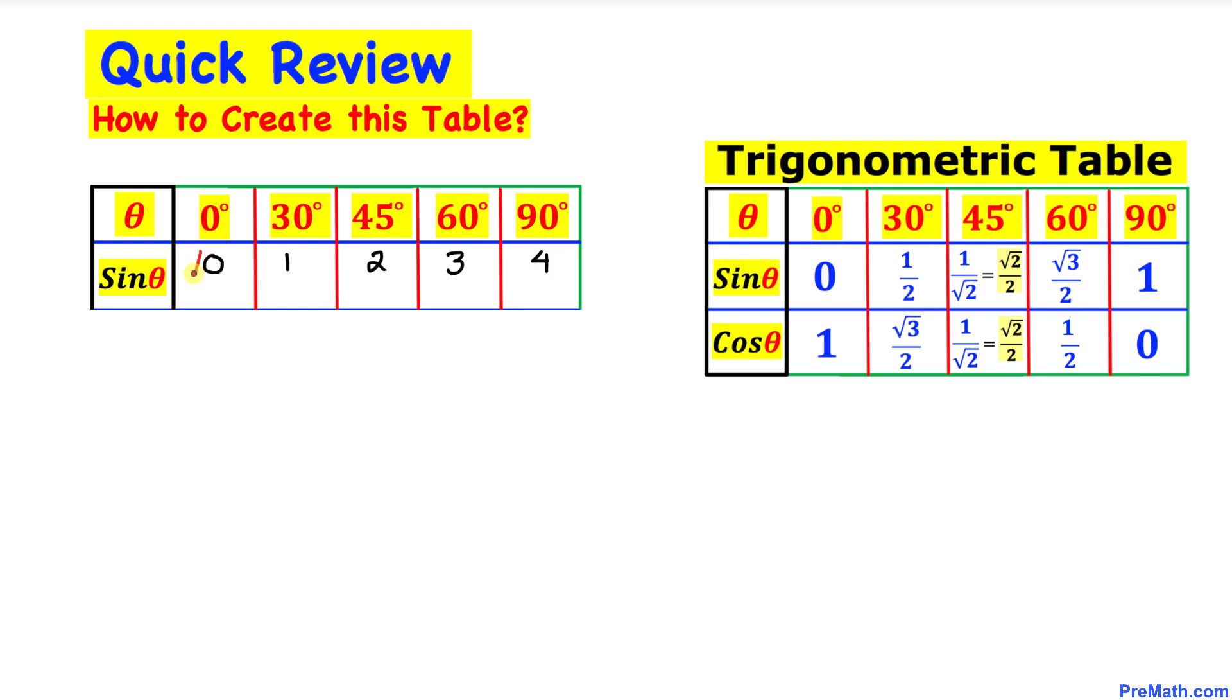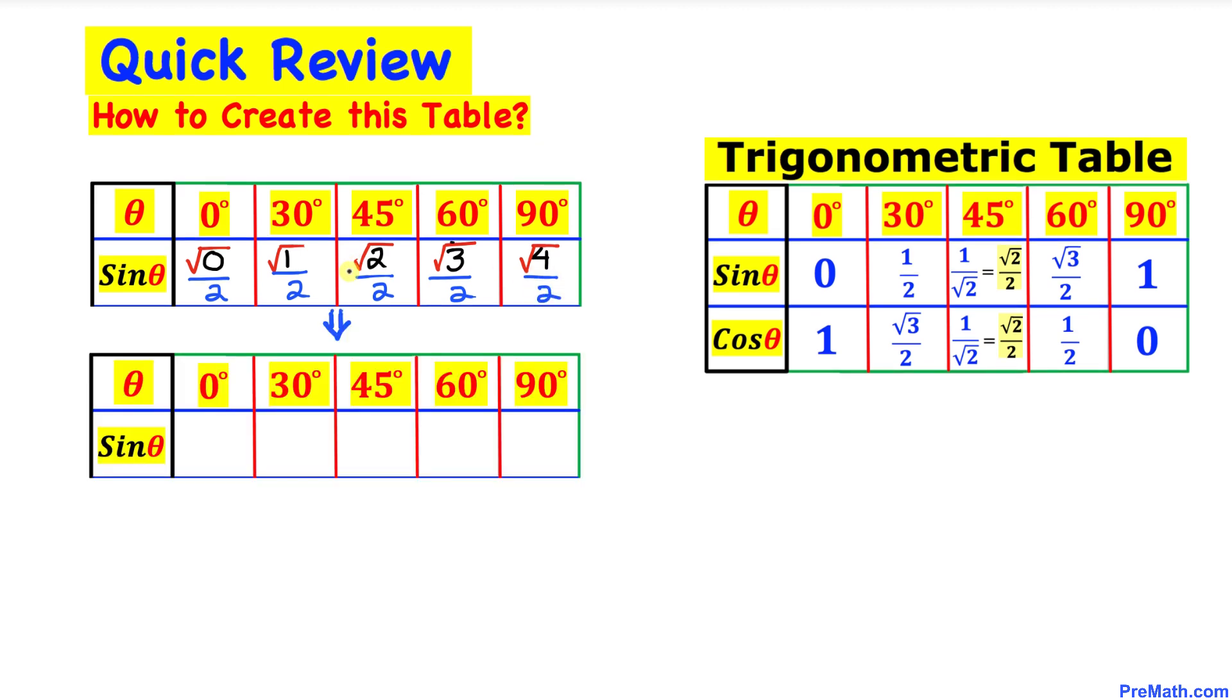Let's go ahead and take the square root of each of these numbers, and finally you divide each of these numbers by 2, all the way by 2, and now let's go ahead and simplify these numbers.